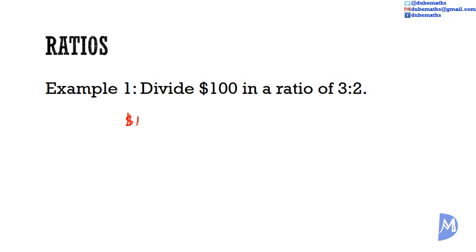$100 divided by 5 is equal to $20. 3 parts or 3 portions is thus equal to 3 multiplied by $20 which is equal to $60.